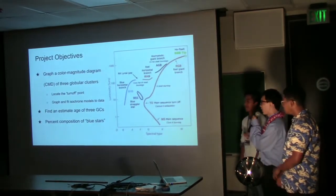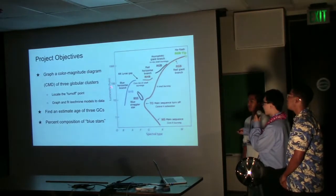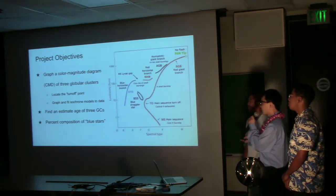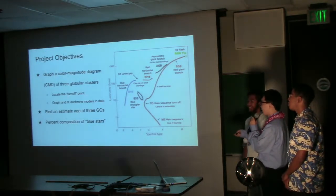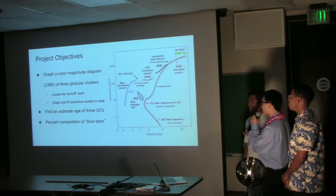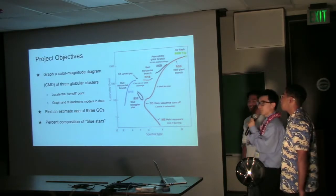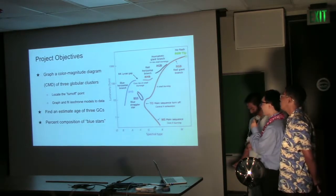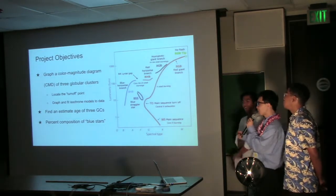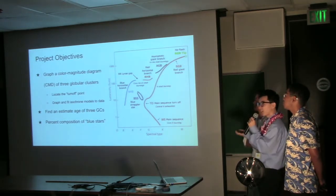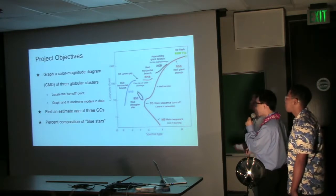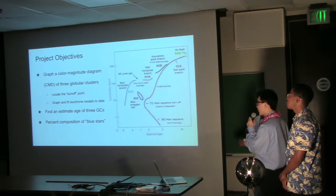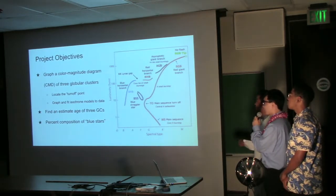Our project objectives are to graph a color magnitude diagram of three globular cluster data sets. Our goal is to locate the turnoff point, which will be discussed later. We'll also use isochrone models to graph and fit isochrones on top of the cluster diagrams, which will help us determine an estimated age of the three globular clusters. We'll also use a histogram to find the percent composition of blue stars, where more blue stars indicates a younger cluster.